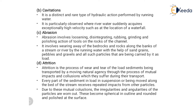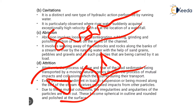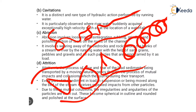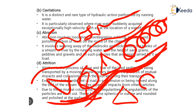Attrition is the process of wear and tear of the load sediments being transported by a moving natural agency through mutual impact and collision during transport. Every particle of sediment in suspension moves along the bed of the stream and receives repeated impacts from other particles. Due to this mutual collision, the irregularity and angularity of the particles are worn out and they become spherical in outline and polished at the surface. So particles of angular or conical shape become round and spherical through circular motion as they travel with the river.